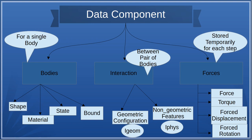Interaction happens when two bodies interact with each other. It has two components: geometric configuration and non-geometric features. For geometric configuration, when two bodies are about to interact they may have shear strain and penetration distance — this is referred to as i-geo. For non-geometric features, it's referred to as i-phys and gives properties dependent on the materials of the bodies, like Young's modulus and shear modulus. Forces refers simply to what is the force on a body. These data components are then visited by the engine and different physics interactions are applied.